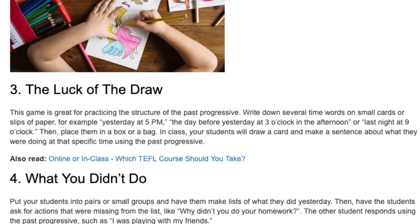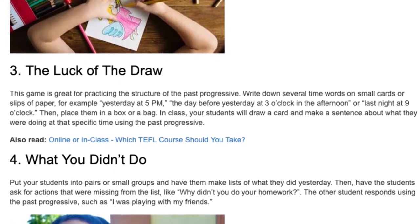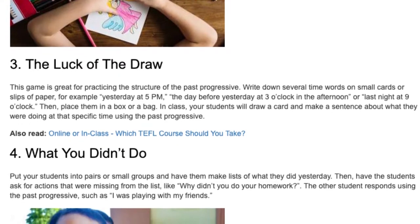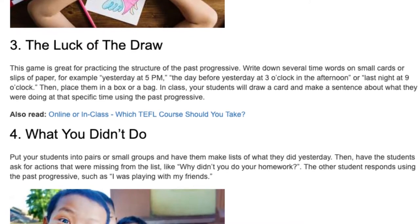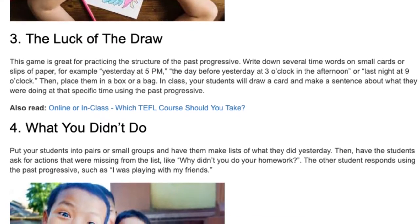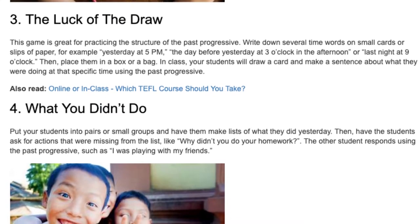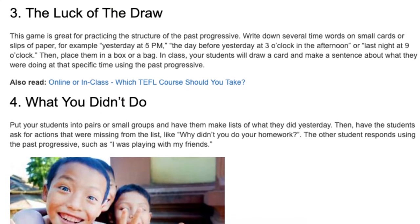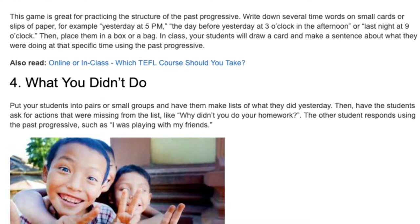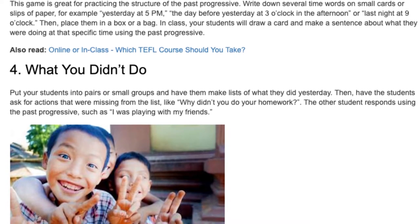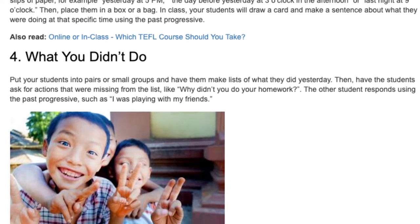4. What You Didn't Do. Put students into pairs or small groups and have them make lists of what they did yesterday. Then have students ask about actions that were missing from the list — like 'Why didn't you do your homework?' — and the other student responds using the past progressive, such as 'I was playing with my friends.'